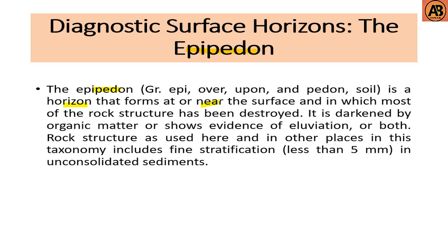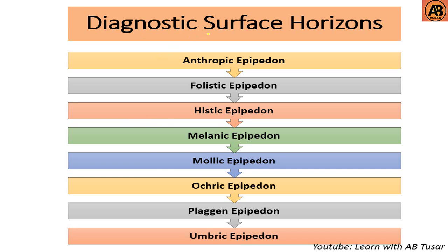Diagnostic surface horizons: the epipedon. The epipedon is a horizon that forms at or near the surface in which most of the rock structure has been destroyed. It is darkened by organic matter or shows evidence of eluviation or both. Rock structure as used here includes fine stratification less than five millimeters in unconsolidated sediments. The diagnostic surface horizons are: anthropic epipedon, folistic epipedon, histic epipedon, melanic epipedon, mollic epipedon, ocric epipedon, plagen epipedon, and umbric epipedon.